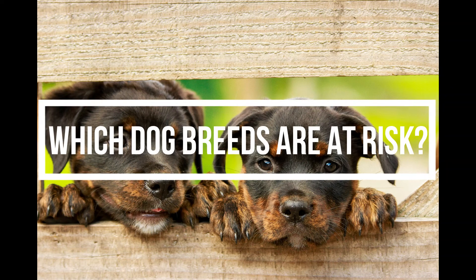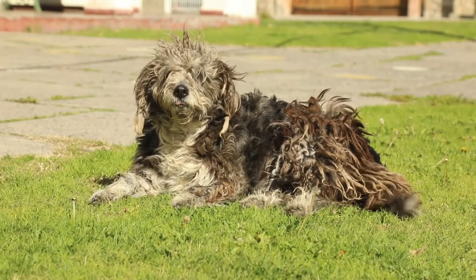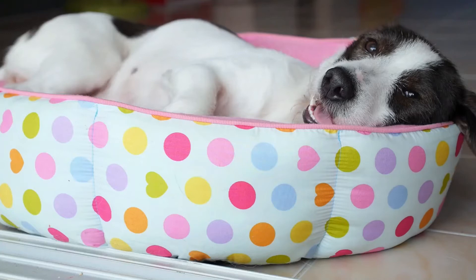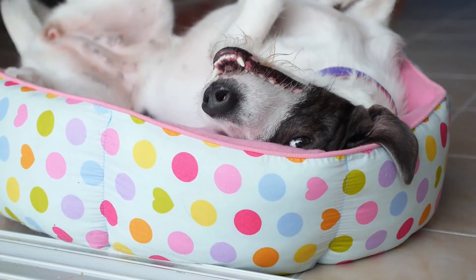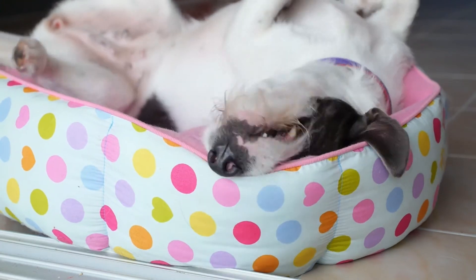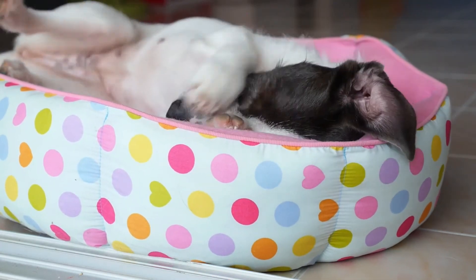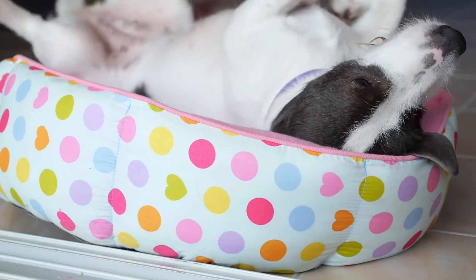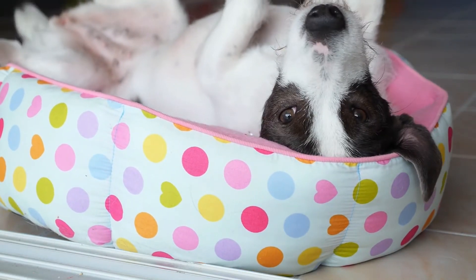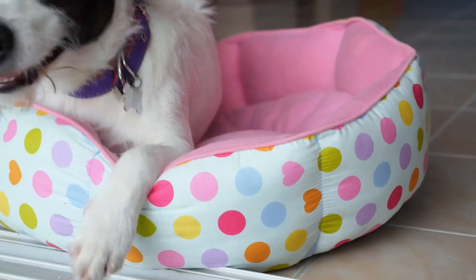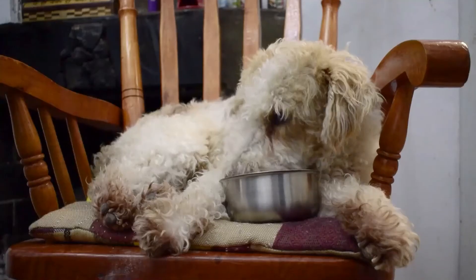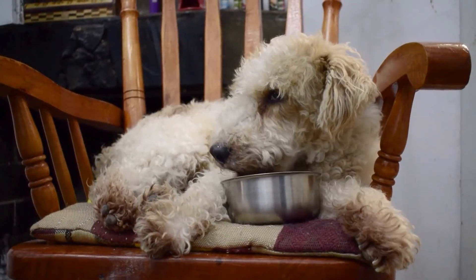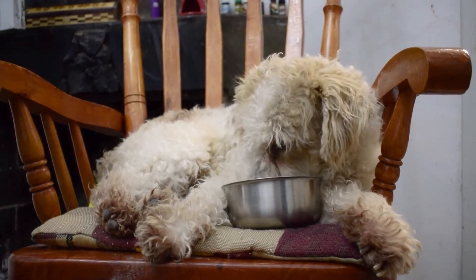Which dog breeds are at risk? Diabetes typically occurs when dogs are between 4 to 14 years of age. Unspayed female dogs are twice as likely as male dogs to suffer from diabetes. Any dog could develop diabetes, but these breeds appear to be at greater risk: Cocker Spaniels, Dachshunds, Doberman Pinchers, Labrador Retrievers, and Samoyeds. If you feel your dog is at risk for developing diabetes, consider having your pet tested during a regular veterinary examination at least once a year.